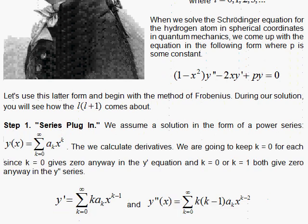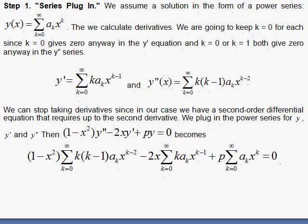So the first step in the method of Frobenius is the series plug-in. We have the infinite series. We take the first derivative, brings down a k here, k minus 1, and the second derivative brings down a k minus 1 here, and we substitute these into the differential equation.